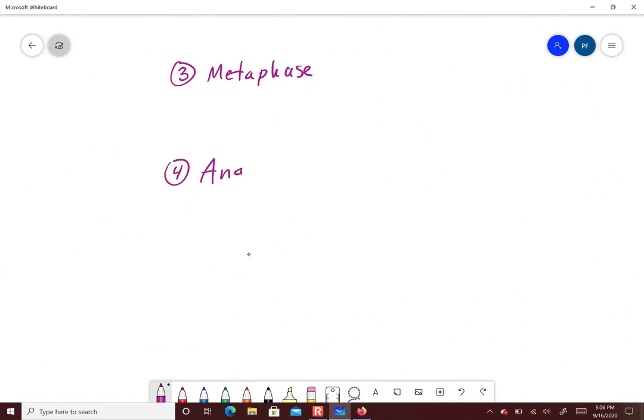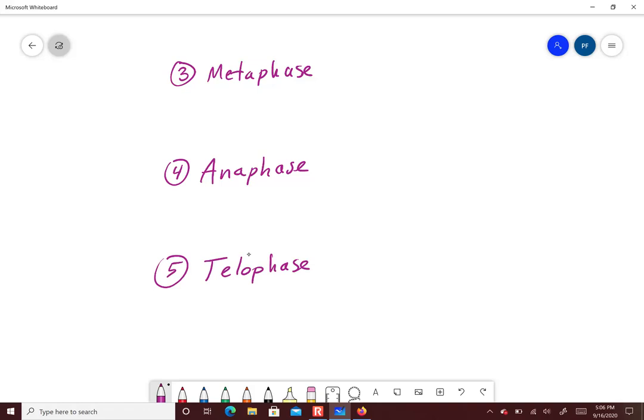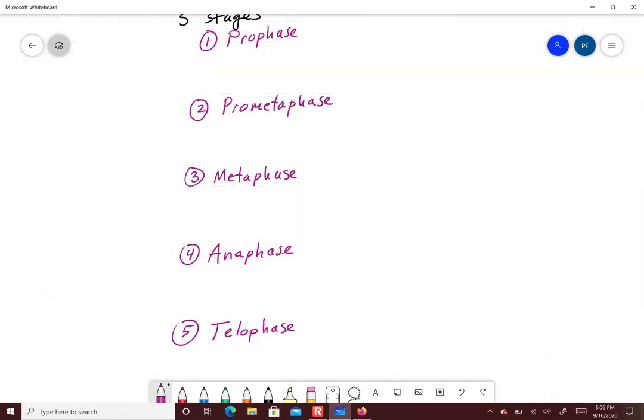Metaphase, and then there's anaphase, and the last is called telophase. Alright, so those are our five stages: prophase, prometaphase, metaphase, anaphase, telophase.